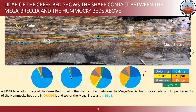We use XRF together with LIDAR to look at lithologies. We find tremendous changes in mud, carbonate, and quartz between what's underlying the hummocky cross-stratification and what's above it.